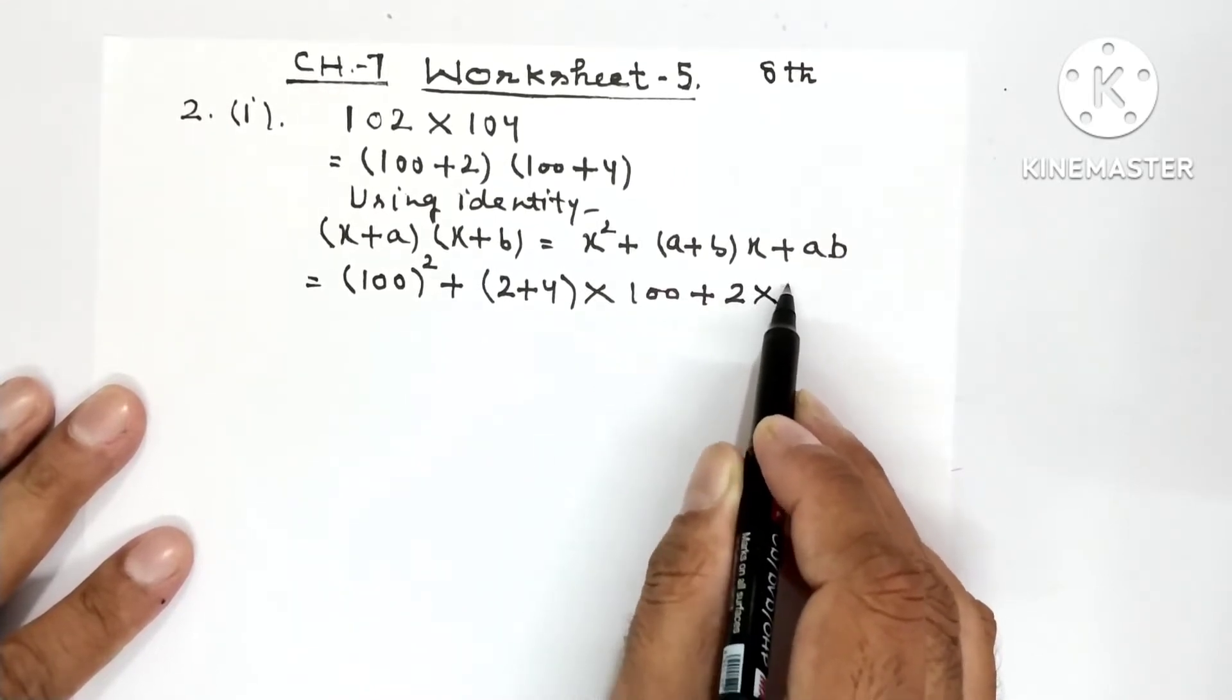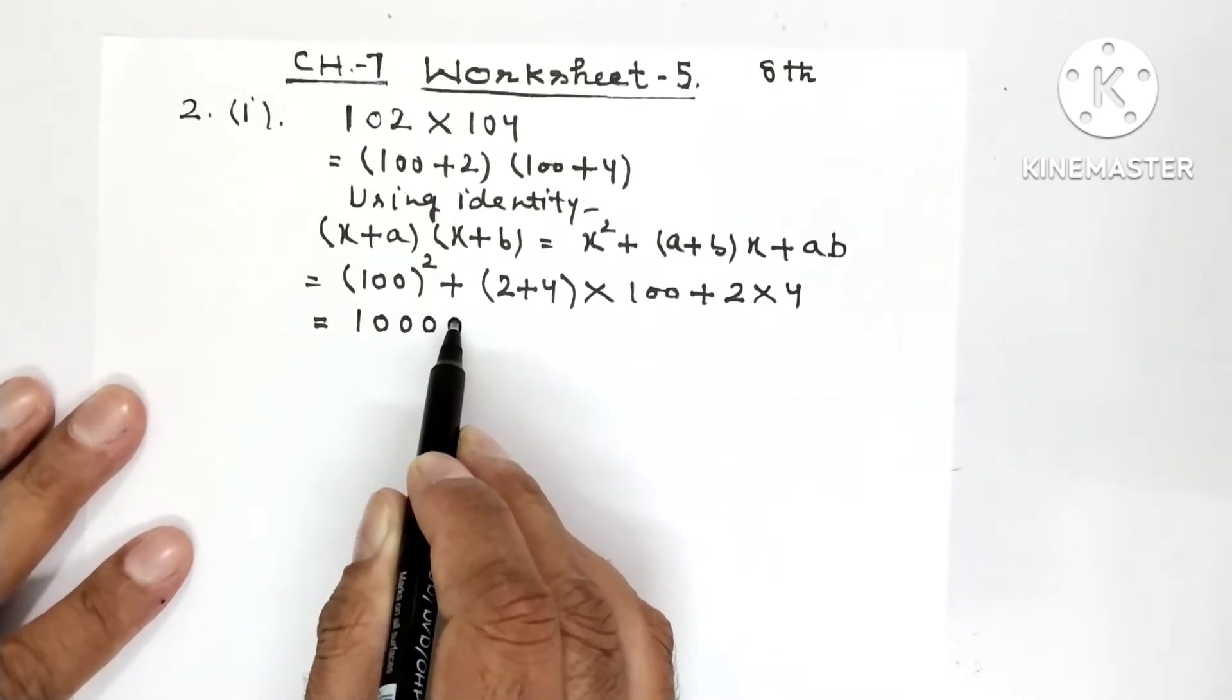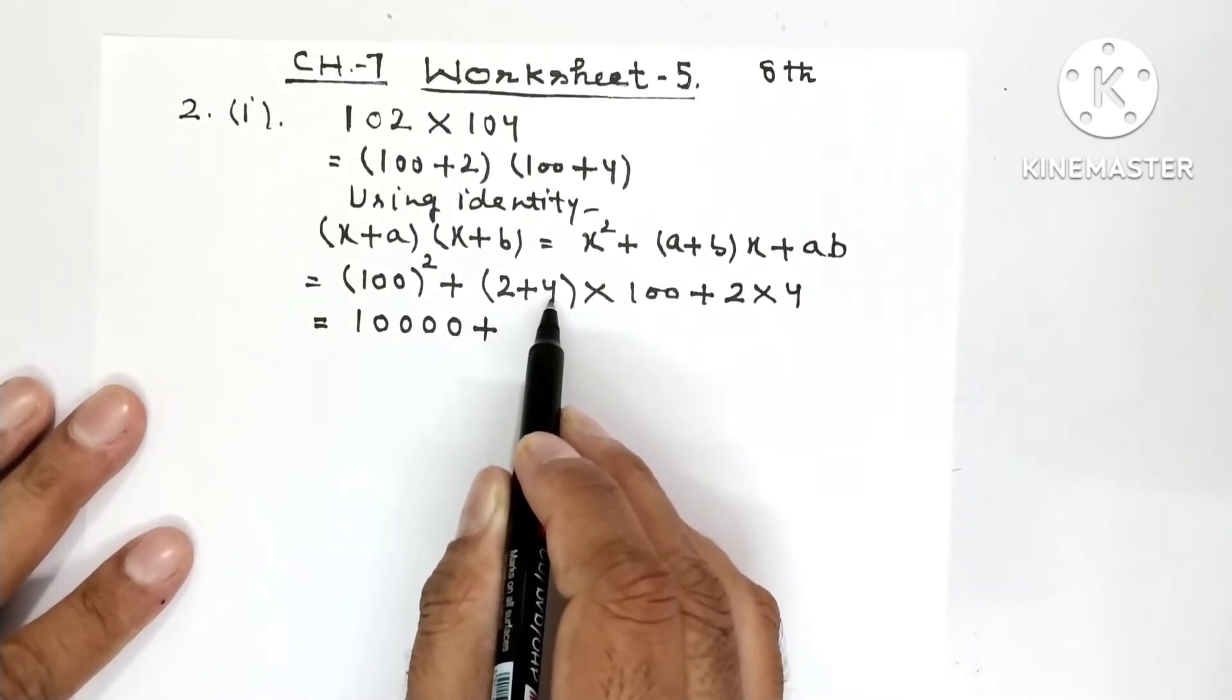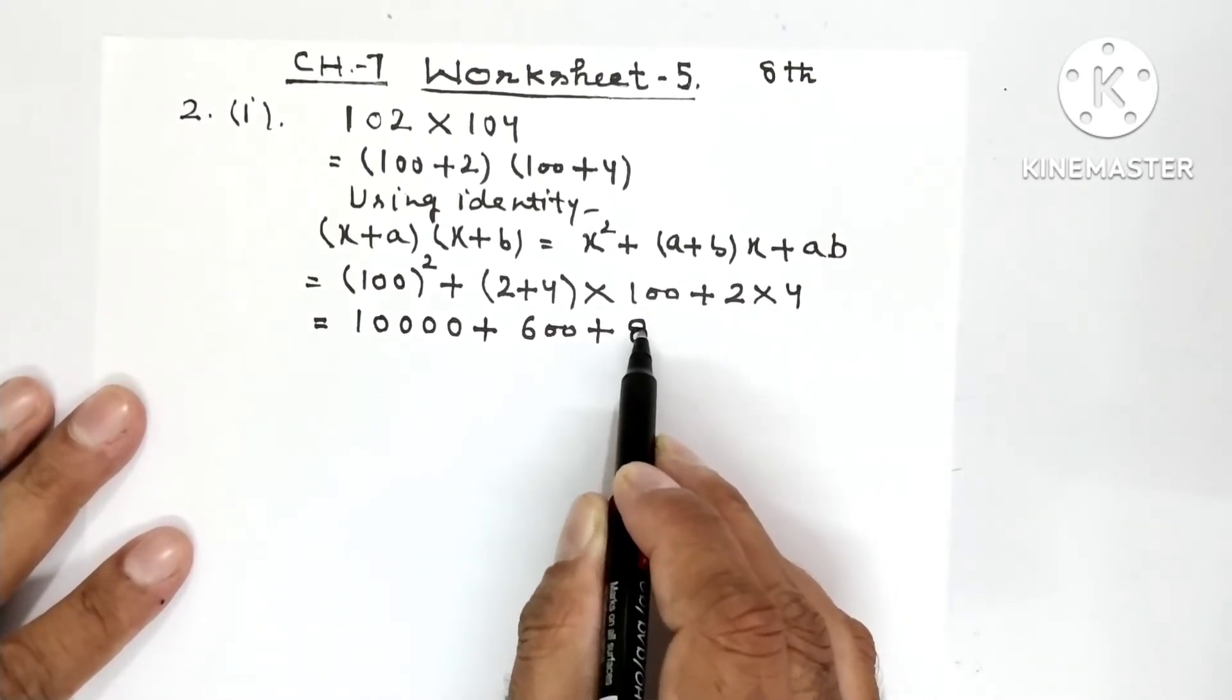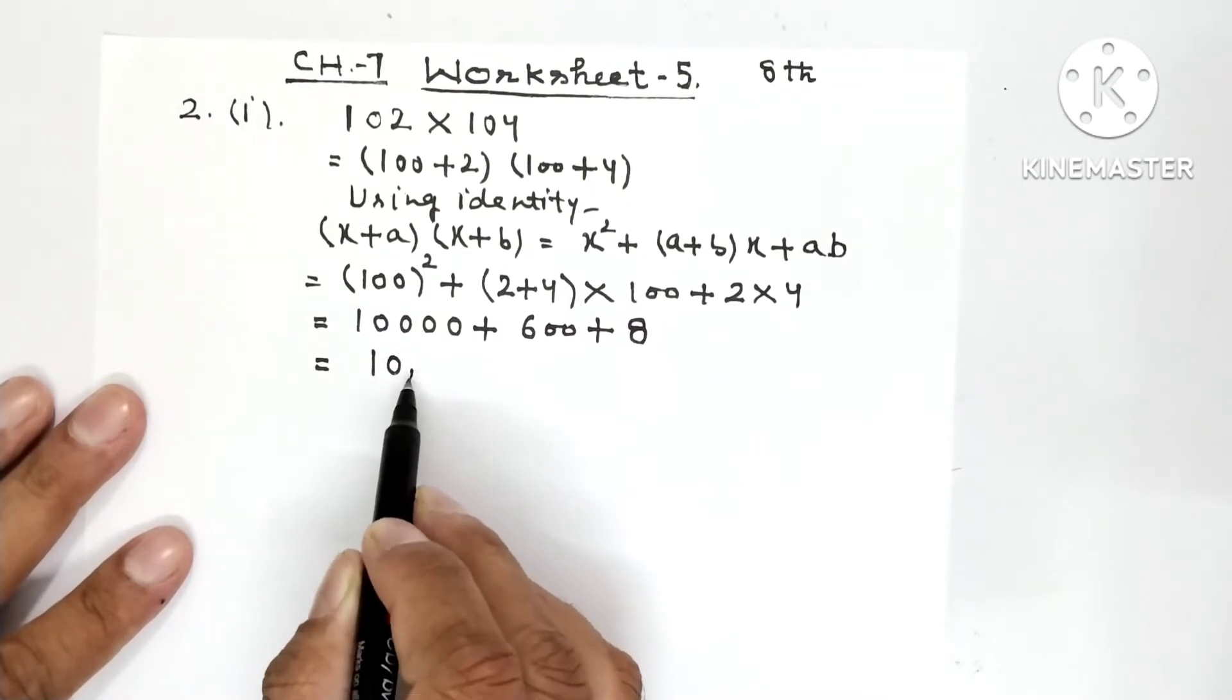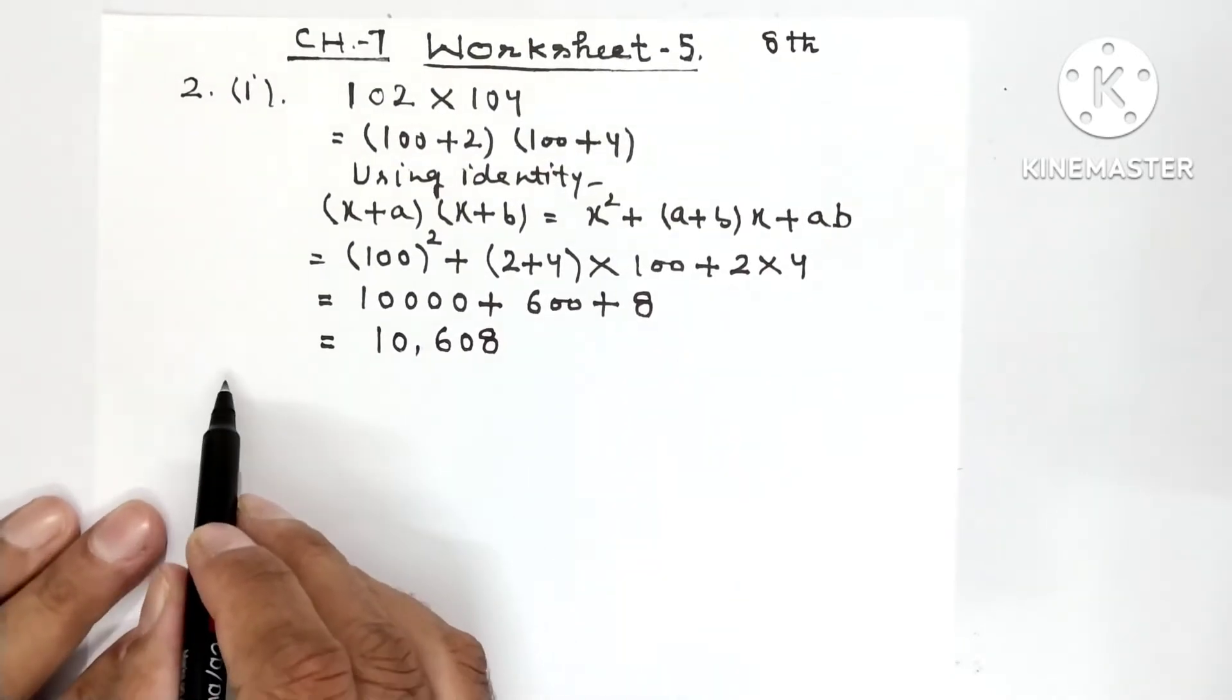So we will write x² means 100 whole square. So 100 square is 10,000 plus 2 plus 4 is 6, 6 into 100 is 600, plus 2 fours are 8. So when you will add this, you will get 10,608.